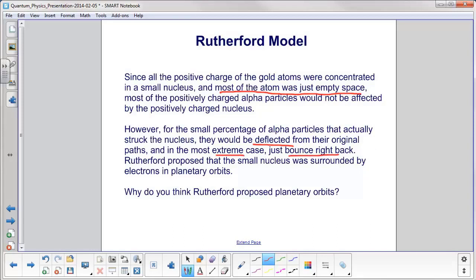Rutherford then proposed that the small nucleus was surrounded by electrons in planetary orbits. Why do you think Rutherford proposed planetary orbits to explain this?